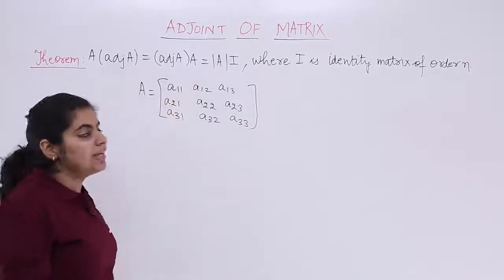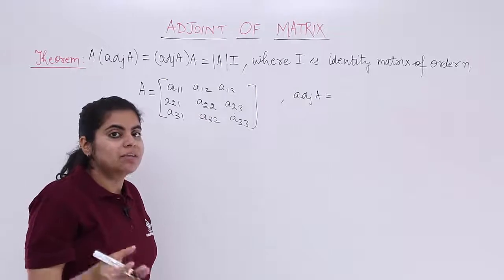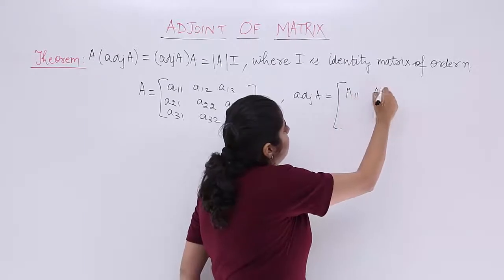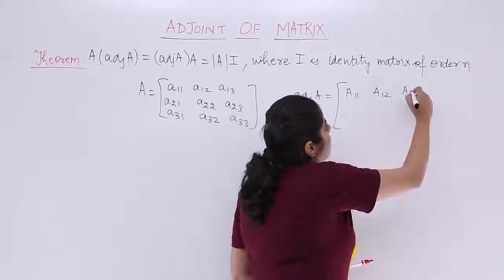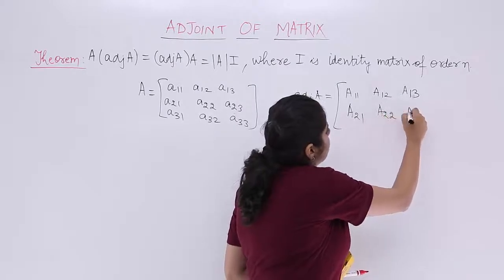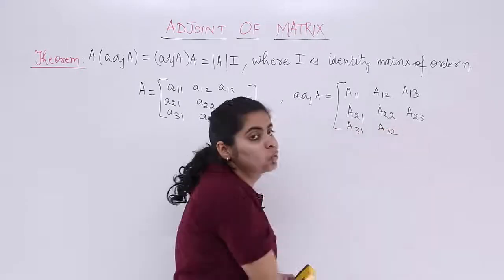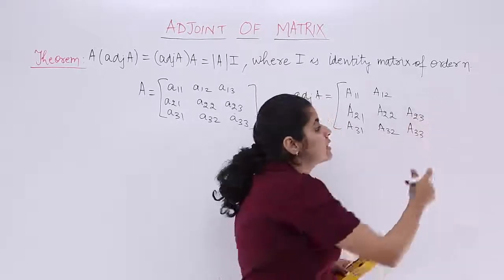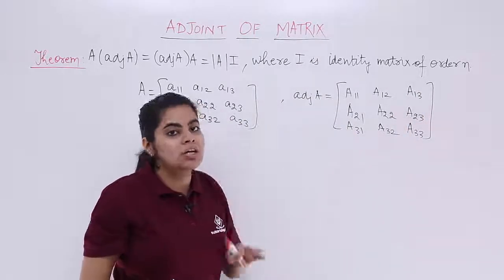Now what is the adjoint of A that we need to calculate? Adjoint of A is the transpose of the cofactors. So adjoint of A has elements A11, A12, A13 in the first row; A21, A22, A23 in the second row; and A31, A32, A33 in the third row. The adjoint is formed by listing the cofactor elements and then taking the transpose.